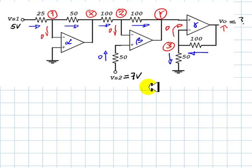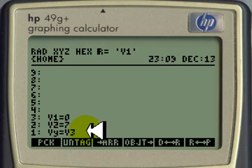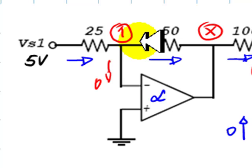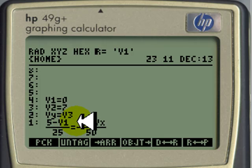And the third and last negative feedback equation for this one is that Vy equals to V3. Now we write the KCL equation 1: 5 minus V1 over 25 equals to V1 minus Vx over 50.